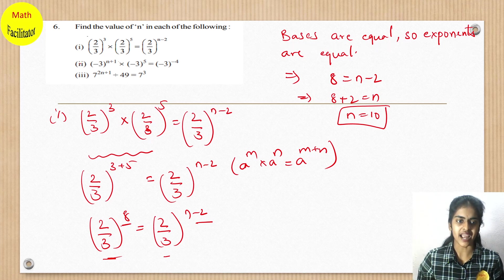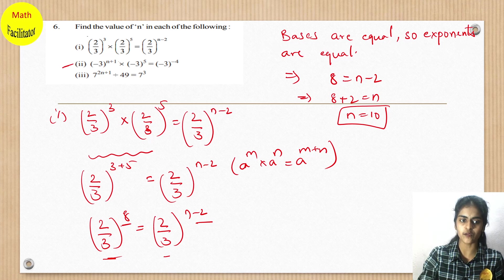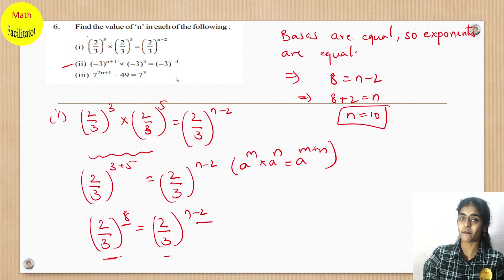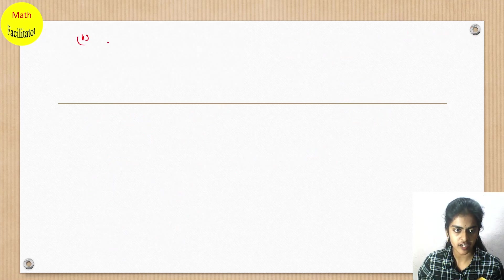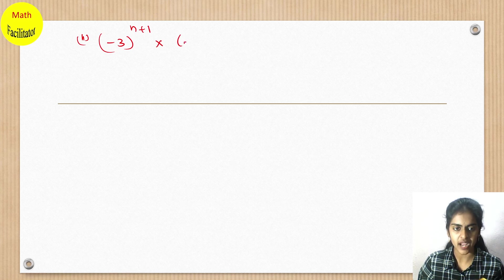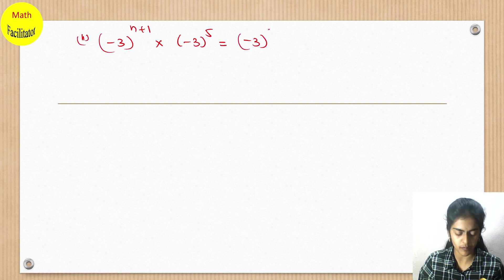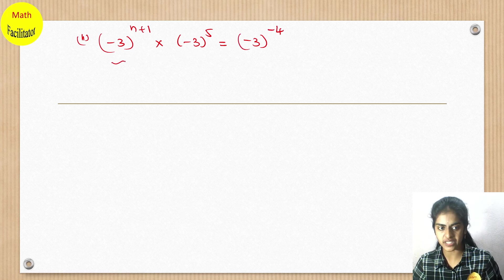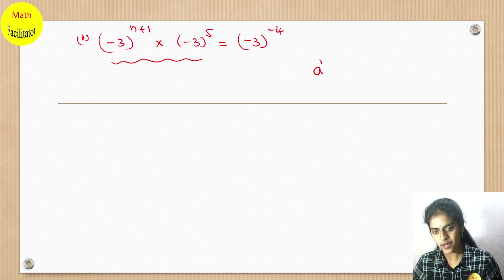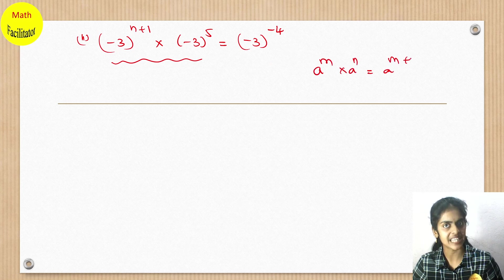Next question: (-3)^(n+1) × (-3)⁵ equals (-3)^(-4). The LHS is again of the form a^m × a^n, which equals a^(m+n).